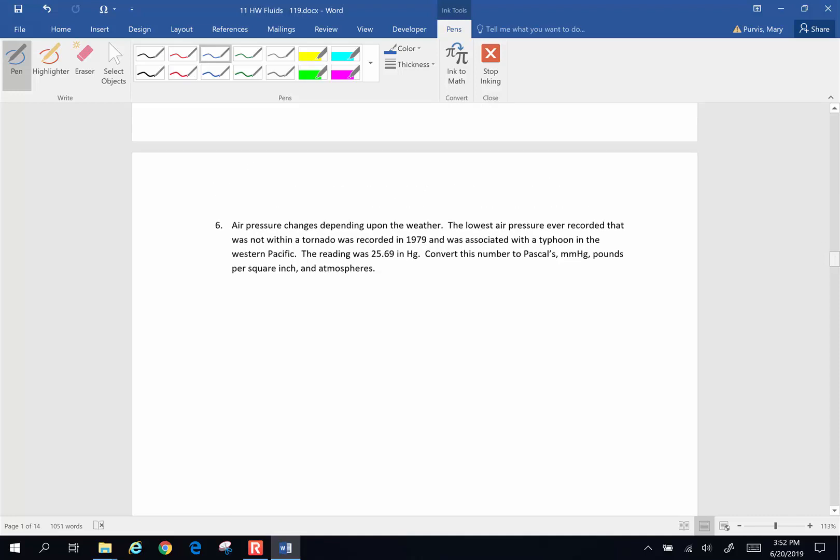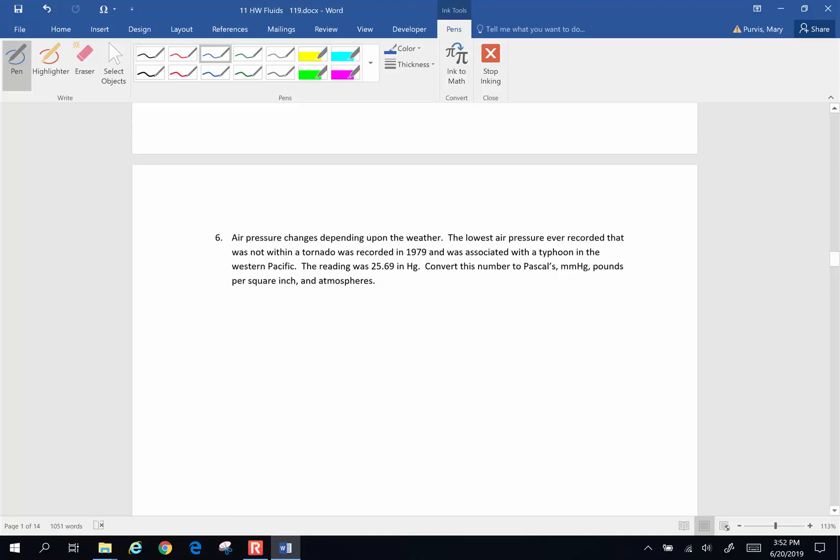The next one is practice with all those wacky crazy units of pressure. The lowest air pressure ever recorded was within a tornado in 1979 associated with a typhoon in the western Pacific. The reading was 25.69 inches of Hg, and Hg is the atomic symbol for Mercury. Convert this into Pascals, millimeters of Mercury, pounds per square inch, and atmospheres. So we're going to have a little conversion party.